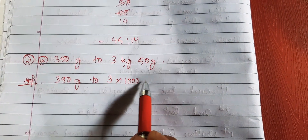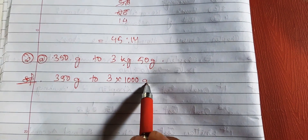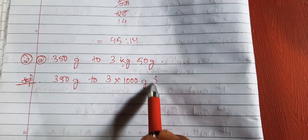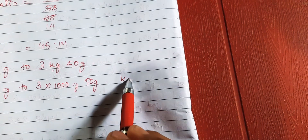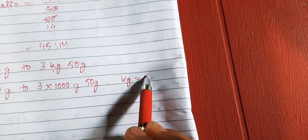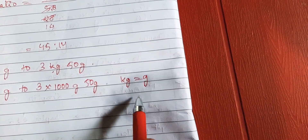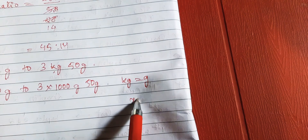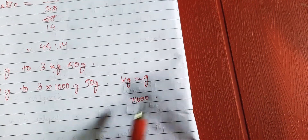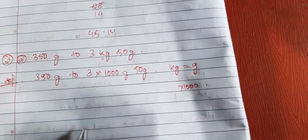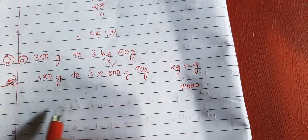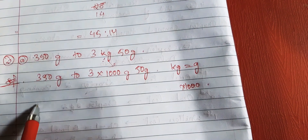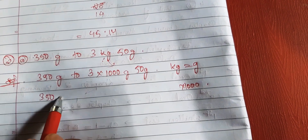So we have 350 grams, and we need to convert 3 kg into grams. Converting kg to grams means multiplying by 1000, so 3 kg becomes 3000 grams. Don't get confused — 1 kg equals 1000 grams.